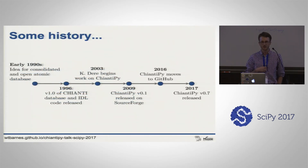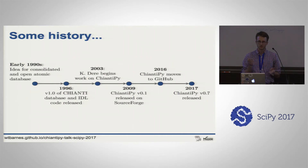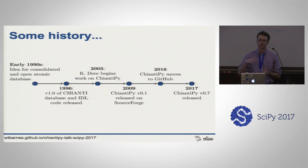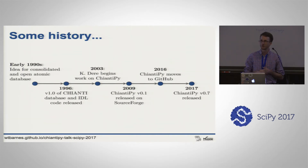A brief history of this project: it started around the early 1990s when atomic physicists and solar observers came together and realized they needed a consolidated database for complicated atomic data. Before computers were ubiquitous, there were pages and pages of tables in astrophysical papers. Their goal was to consolidate all of this into a single place, make it publicly available, and make the code used to analyze the data publicly available too - goals not so different from many of our goals today.